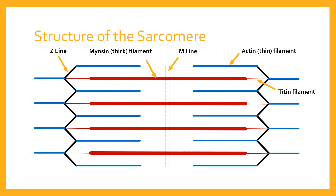If you imagine several thousand sarcomeres laid end to end, each one pulling towards its M-line, the overall impact along the entire muscle cell is that the whole muscle contracts and gets shorter. That's exactly what we want to achieve through muscle contraction. A concentric contraction, where the muscle is contracting and getting shorter, is achieved by the shortening of the sarcomere.